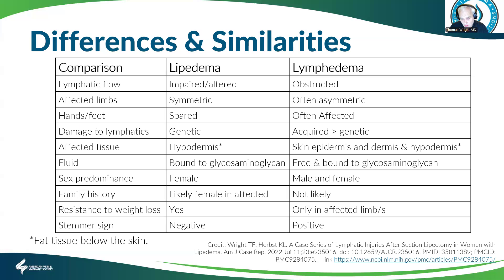Lipedema is almost exclusively in females, and lymphedema affects both men and women but is still female predominant. Most women with lipedema have a female relative affected. There's resistance to weight loss in the affected tissues in lipedema, versus primarily affected limbs in lymphedema. The Stemmer sign is usually negative in lipedema and usually positive in lymphedema.